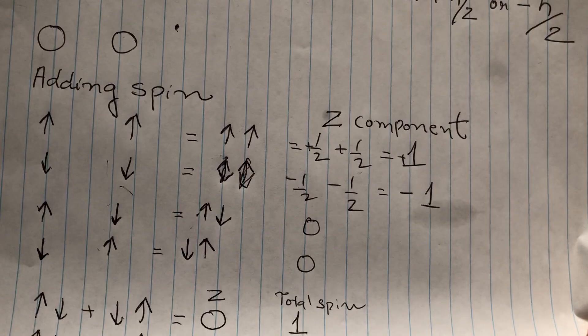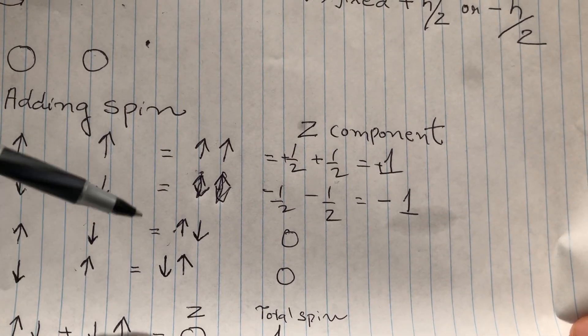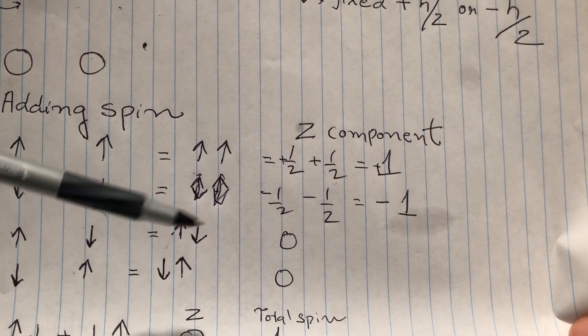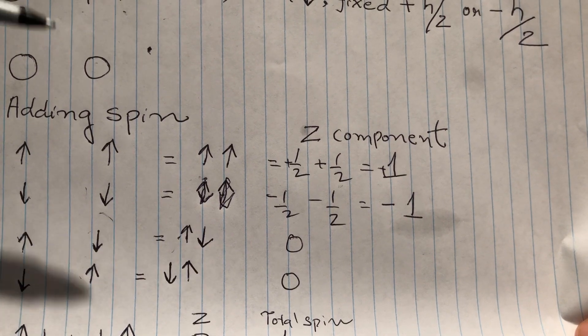Now, the interesting part will be, if this is up and the other one is down, so you will say it's up and down, it will be zero. If this is down and this is up, then again, it will be zero.